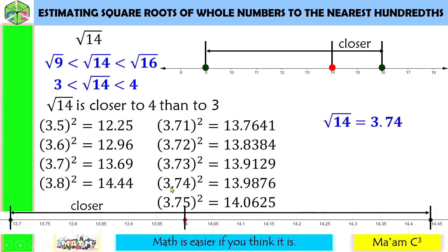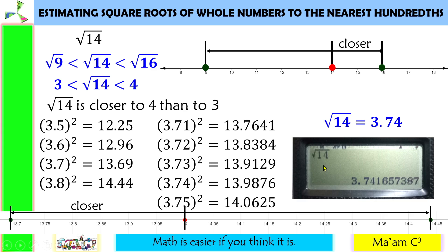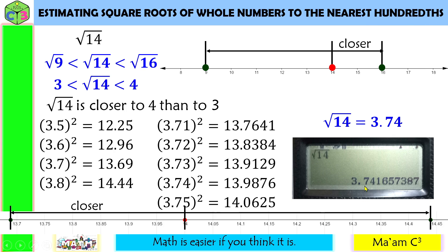If you want to check, get your calculator and input square root of 14. The square root of 14 is equal to 3.74. We are rounding off to the nearest hundredths, so up to two decimal places. Our answer, 3.74, is correct.